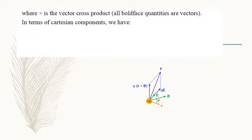We can also check: if charge Q is there and it is moving with velocity V, and we are applying B in any direction, then Q·V cross B is perpendicular to both — the cross product is perpendicular to both the direction of velocity and the magnetic field.